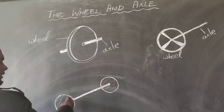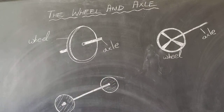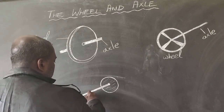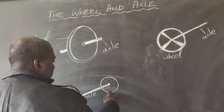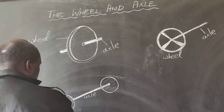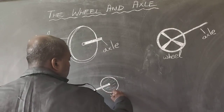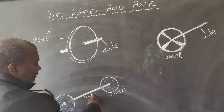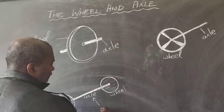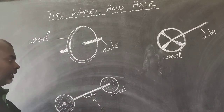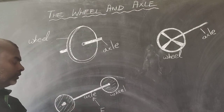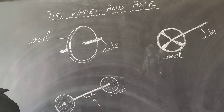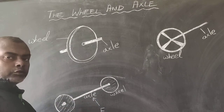Here an example is given: two sets of wheels with one axle. The axle holds these two wheels. When you rotate the axle, the force given on the axle rotates the wheels. So the axle can rotate the wheel.